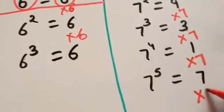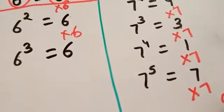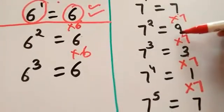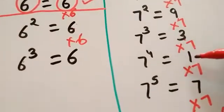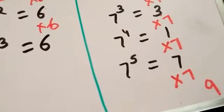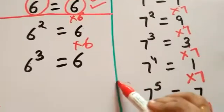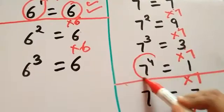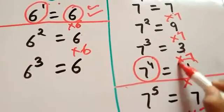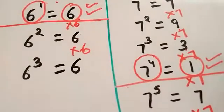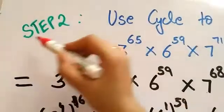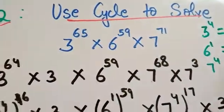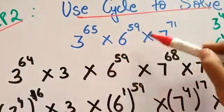7 raised to the power 5: 1 into 7 is 7. 7 raised to the power 6: 7 into 7 is 49, unit digit 9. So the cycle is 7, 9, 3, 1, 7, 9, and so on. After 7 raised to the power 4 the cycle repeats, so the cycle is 7 raised to power 4 with result 1. Step 2 is to use the cycle to solve our problem: 3 raised to power 65 into 6 raised to power 59 into 7 raised to power 71.